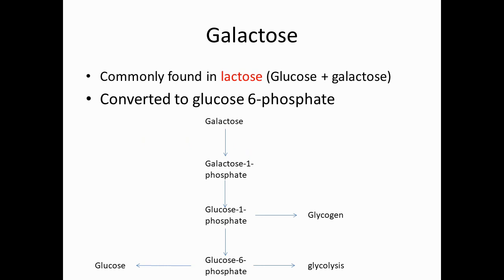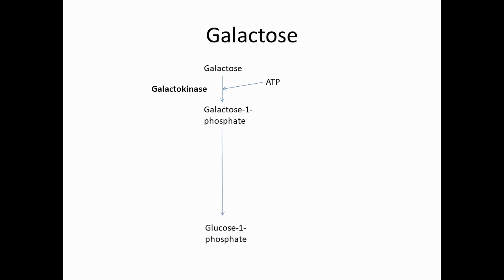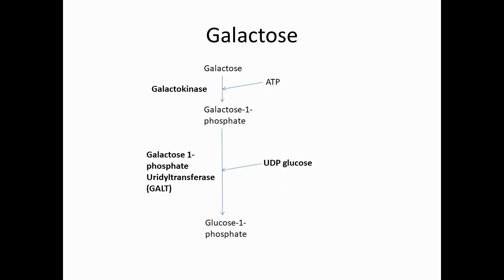Galactose is commonly found in lactose, which is a combination of glucose and galactose. Galactose is usually converted to glucose-6-phosphate, which can then enter glycolysis or gluconeogenesis. In the pathway, galactose first converts to galactose-1-phosphate via galactokinase using ATP, and then galactose-1-phosphate converts to glucose-1-phosphate with the help of galactose-1-phosphate uridylyltransferase (GALT) and UDP-glucose.